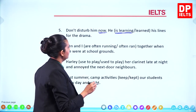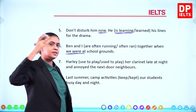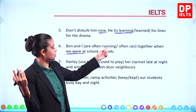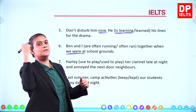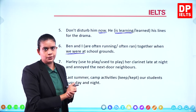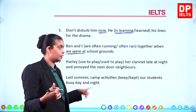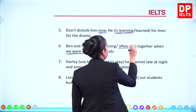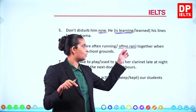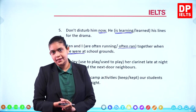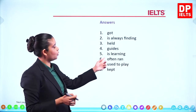'Ben and I often ran together when we were at the school grounds.' 'We were' refers to something in the past. Can you say 'are running'? No — that is present continuous. If it happened in the past, use the simple past tense. 'Ran' is the past tense of run. 'Often' is a frequency adverb. So the answer is 'often ran.'